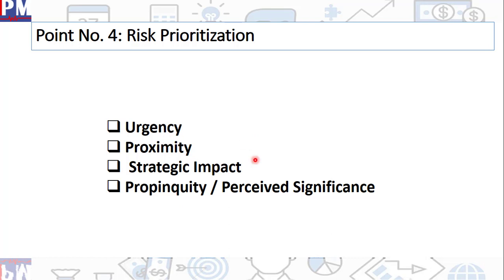Then you have the strategic impact. I don't think I have to even explain it to you. Any risk which has not only the project related effect, it affects the strategy of the organization, will automatically treat it as a high priority.